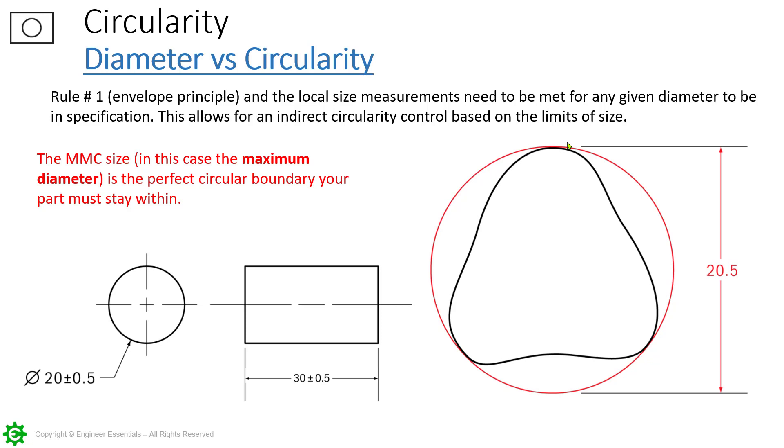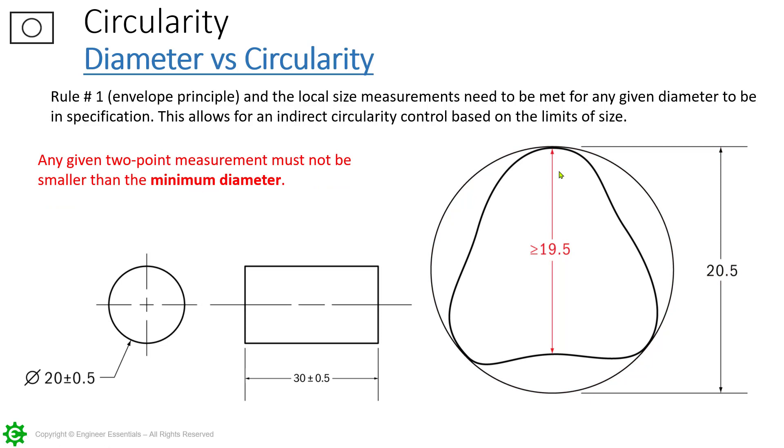But for this topic we're really just looking at the tolerance zone of circularity and want to show you something that me personally I've taken this for granted. That 20.5 sitting there is our envelope, everybody understands that part of it. No surface element can go beyond that boundary of maximum material condition, the envelope. That's represented by the red circle on here and then now they're showing the 19.5. We all understand that that is the least material condition. Going back over to the lower left hand corner 20 millimeters plus or minus 0.5, if we subtract 0.5 from that we get 19.5.